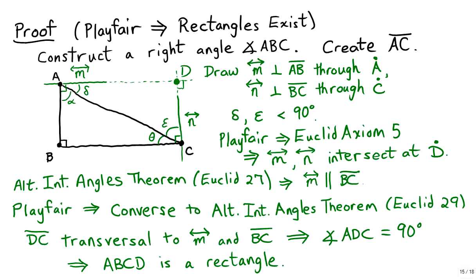For the first half of this logical equivalency, we'll begin by assuming Playfair's axiom is true, and we'll show that rectangles exist by constructing one. We begin by constructing a right angle ABC — the lengths of AB and BC don't really matter. We then connect points A and C. Next, we'll construct a perpendicular line M perpendicular to AB passing through point A, and also a line N perpendicular to BC passing through point C.